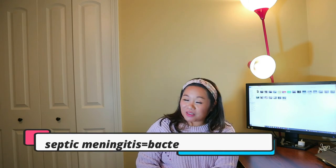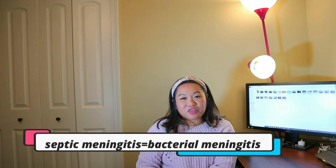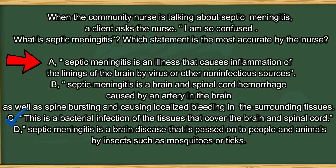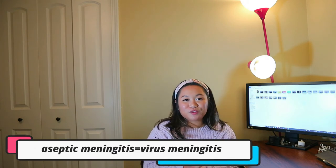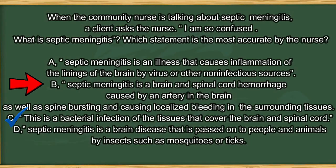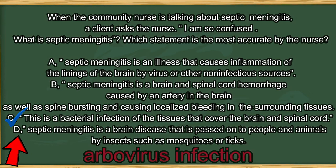The answer is option C. Septic meningitis and bacterial meningitis are the same thing — the two words are used interchangeably. Option A is the wrong answer; this is actually the explanation for aseptic meningitis, which is caused by a virus. Aseptic meningitis and viral meningitis are often used interchangeably. Option B is not a right answer — brain hemorrhage by an artery in the brain is a stroke. Option D describes an arbovirus infection.